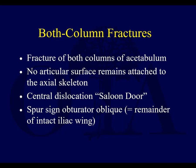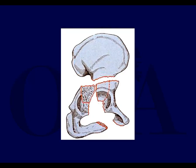The last fracture type: associated both column fractures. This is the equivalent of the AO type C periarticular fractures — where it's fully dissociated. All articular fragments are dissociated from the sciatic buttress, so no articular skeleton remains attached to the axial skeleton. Oftentimes you get central dislocation. You may see something called the spur sign, which is not the same as the gull sign, and it's seen on the obturator oblique view. It represents what's left of the iliac wing posteriorly.